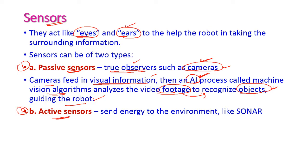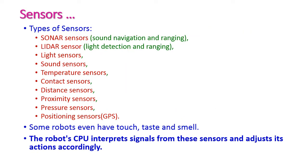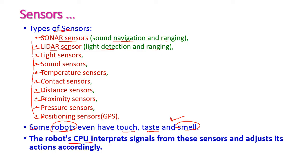Active sensors send energy into the environment, which disturbs it. For example, sonar produces sound that disturbs the surroundings — this is called an active sensor. The different types of sensors used in robotics include sonar (sound navigation and ranging), lidar (light detection and ranging), light sensors, sound sensors, temperature sensors, contact sensors, distance sensors, proximity sensors, pressure sensors, and positioning sensors. Some robots can also have touch, taste, and smell sensors.